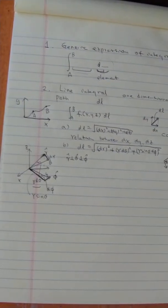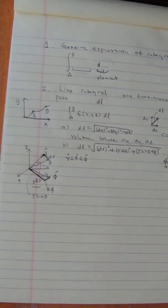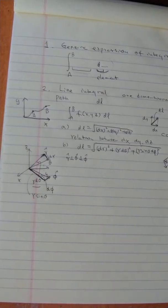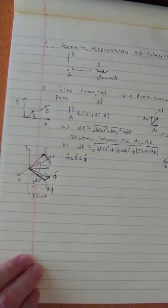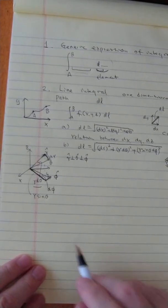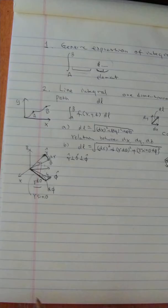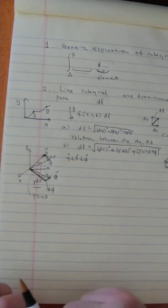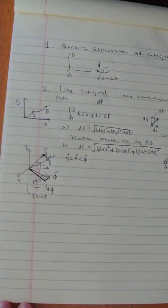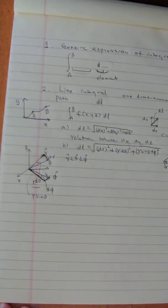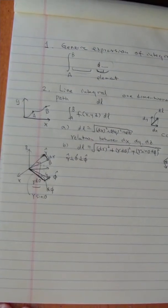For the integral itself, you also need to find a relationship between r, θ, and φ — because with three variables, you cannot do the integral otherwise. You find the same thing as in Cartesian coordinates. That is the so-called line integral.